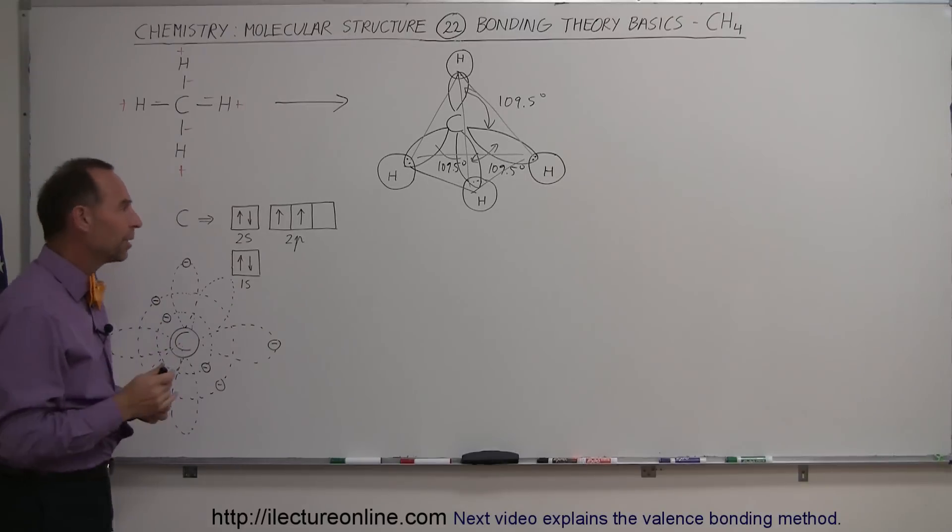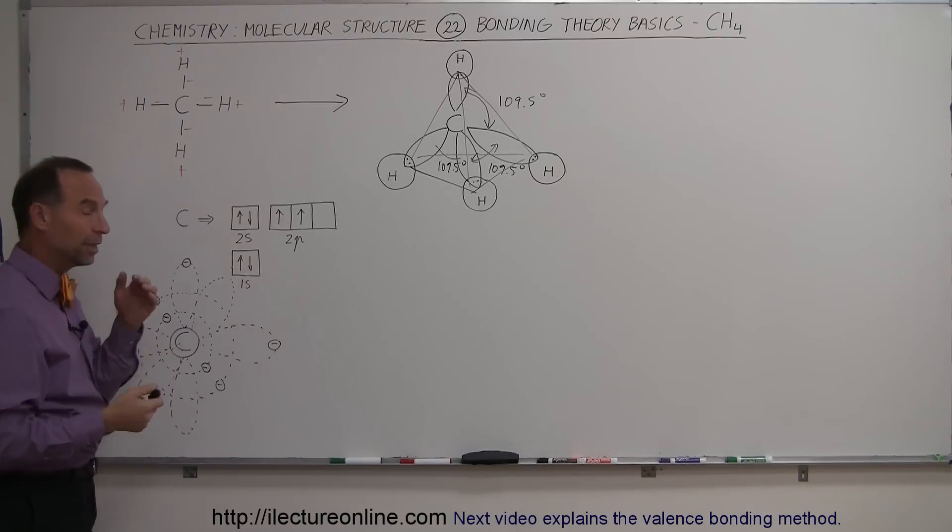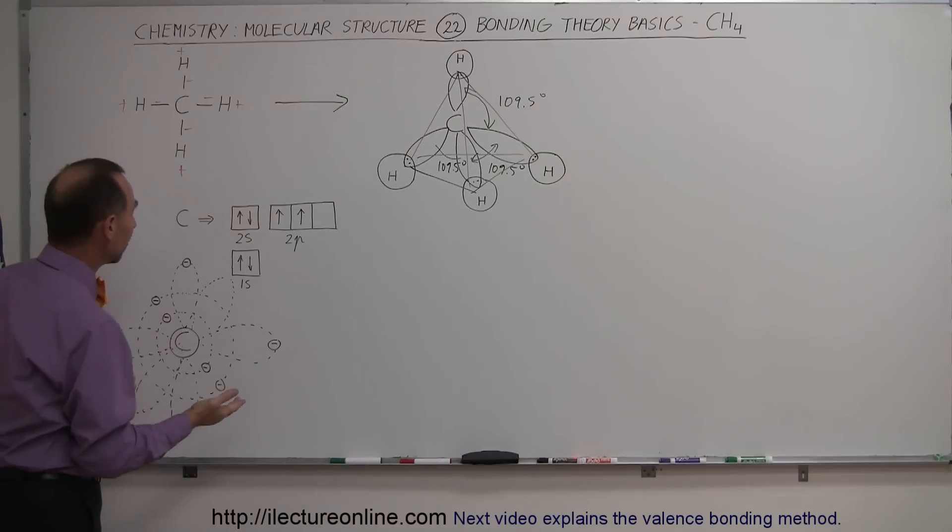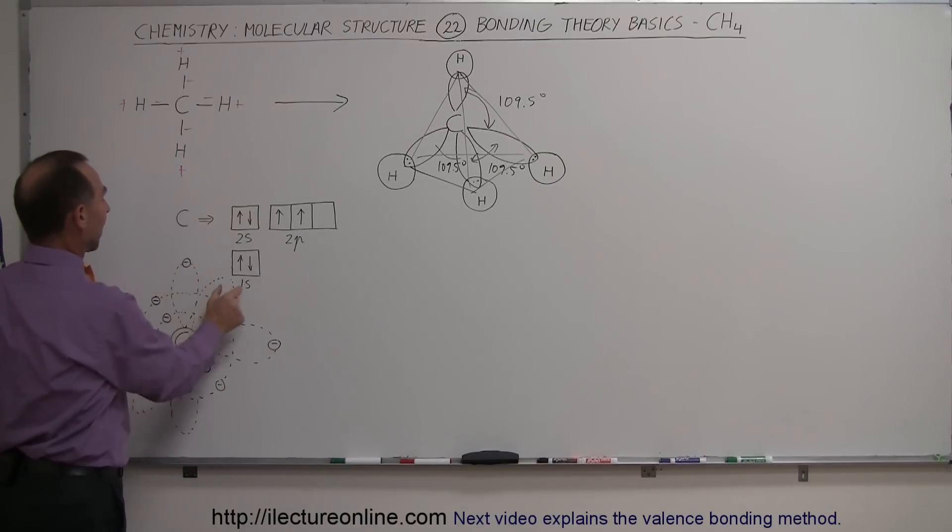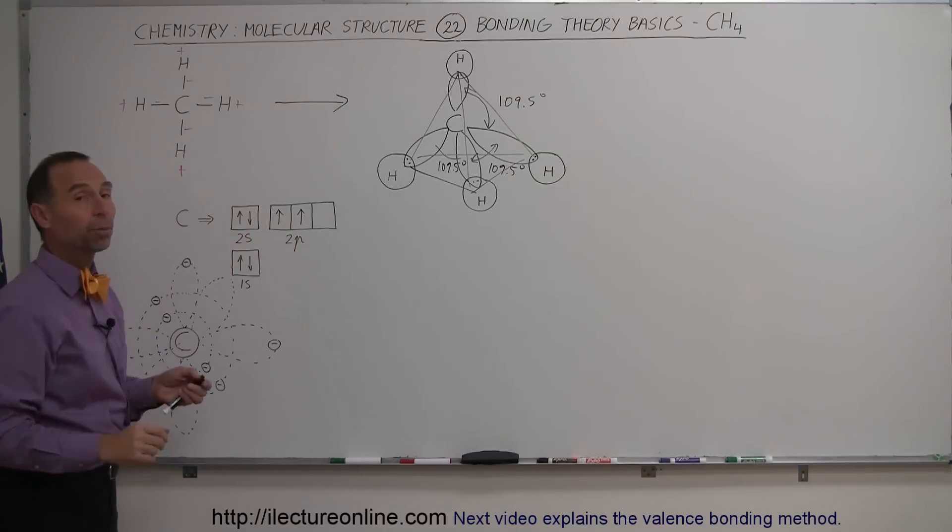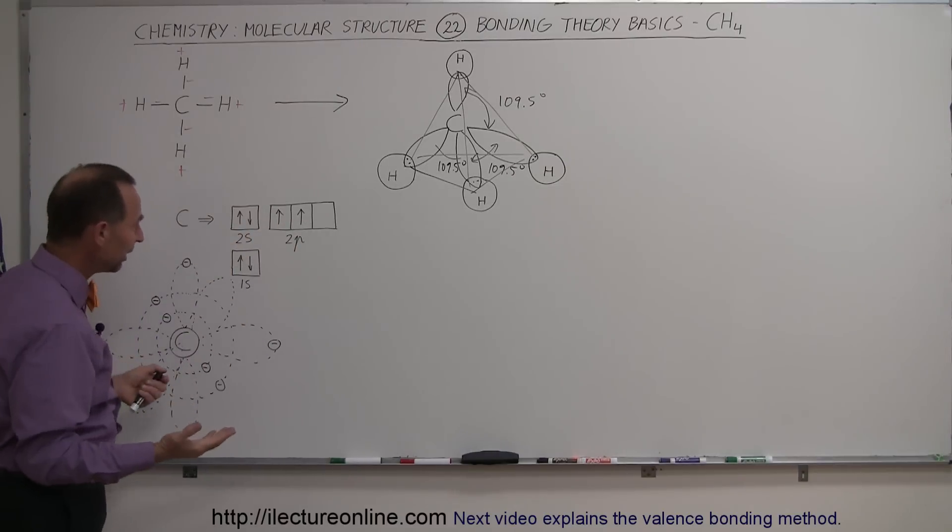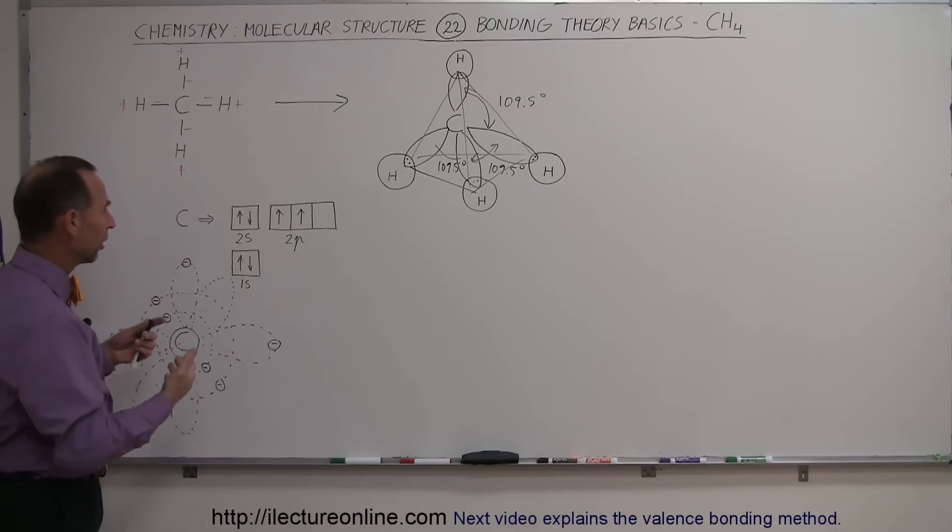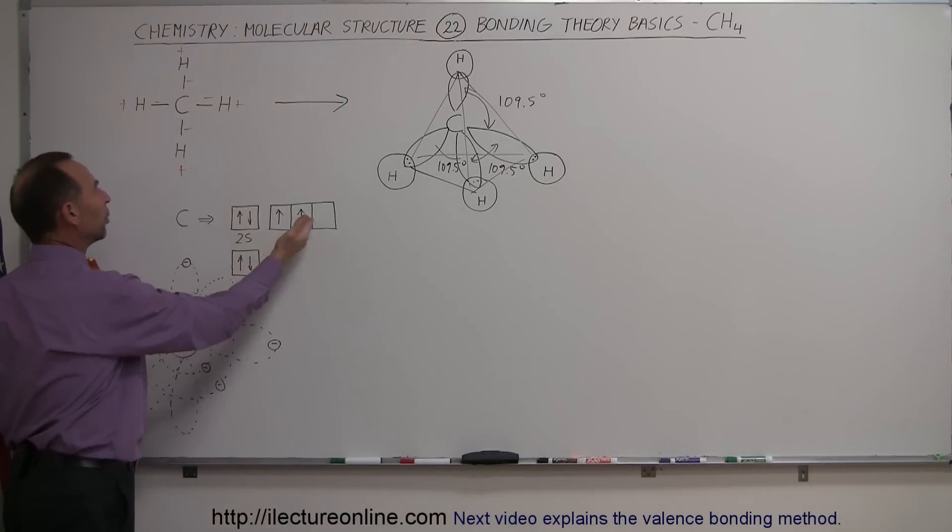Now there's another problem with that because our basic understanding of the orbitals and where the electrons are at. For a carbon atom, we have two electrons in the first s orbital, two electrons in the second s orbital, and then two electrons in two of the three p orbitals.